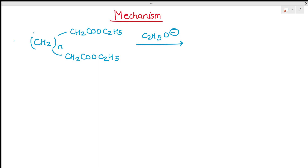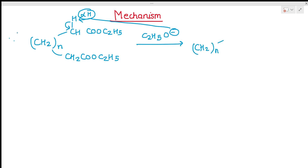The alpha hydrogen is identified and the base attacks it. This bond moves, and we obtain a carbanion — a negative charge on the carbon. This is called the enolate anion.